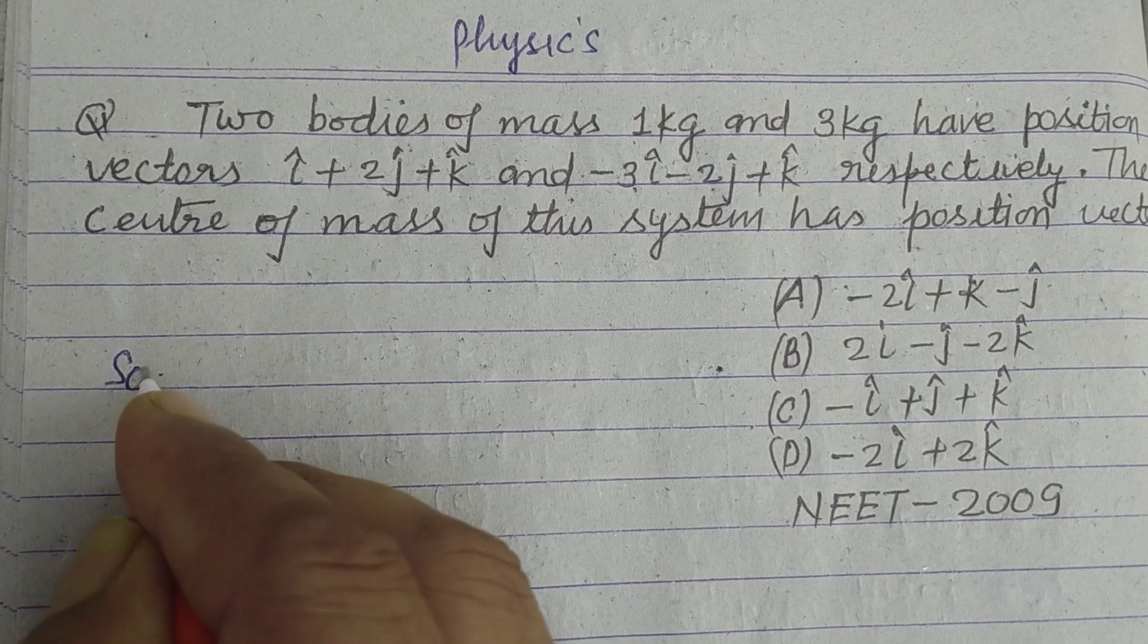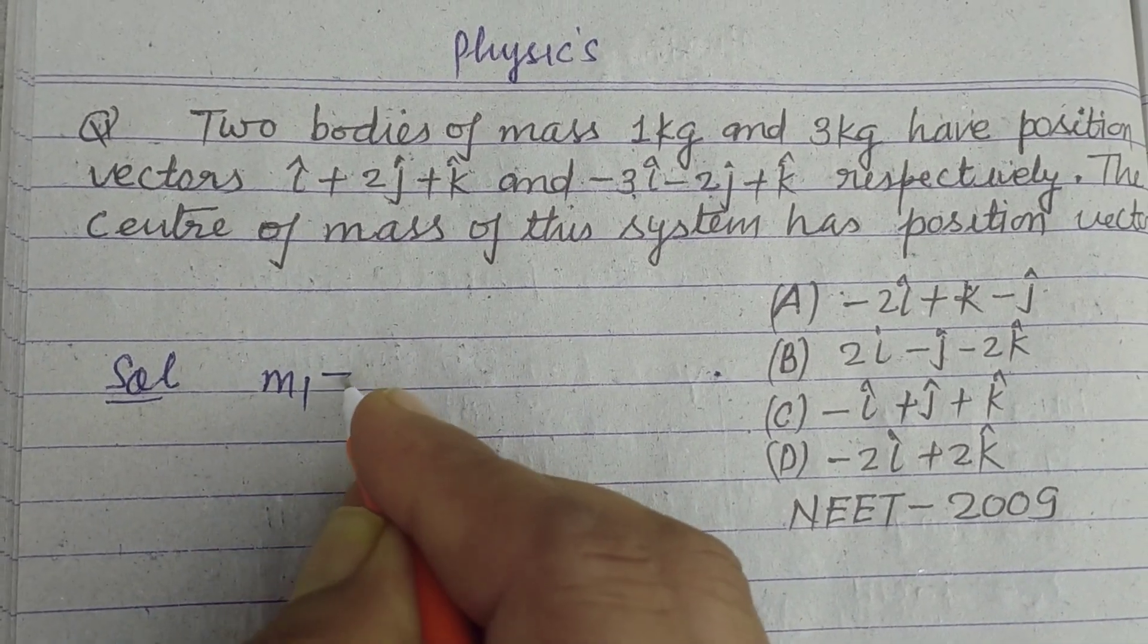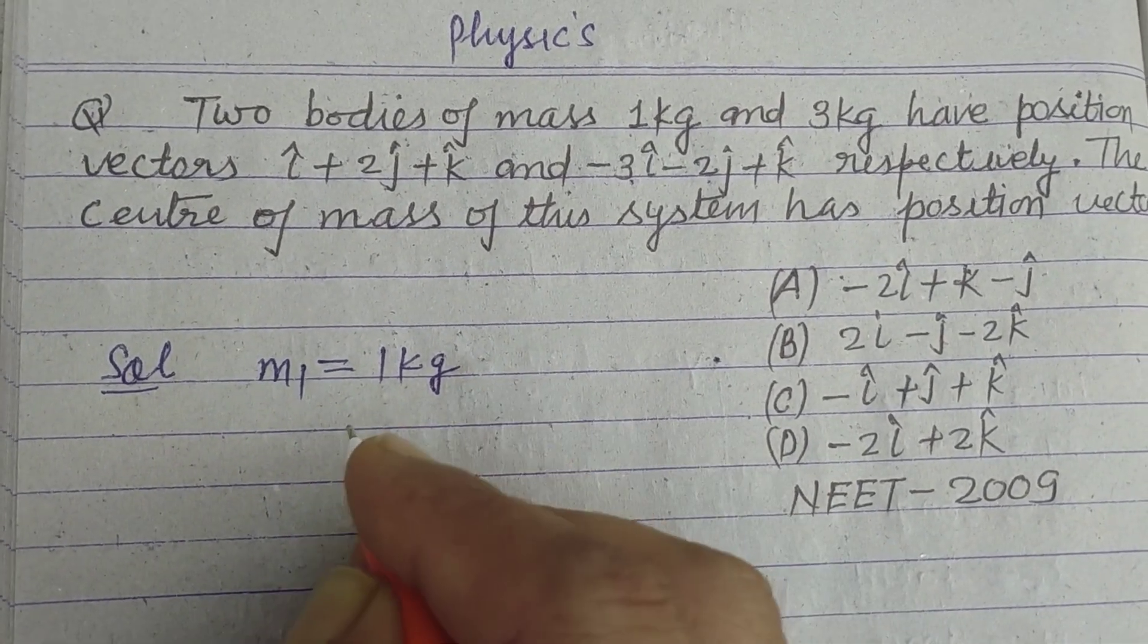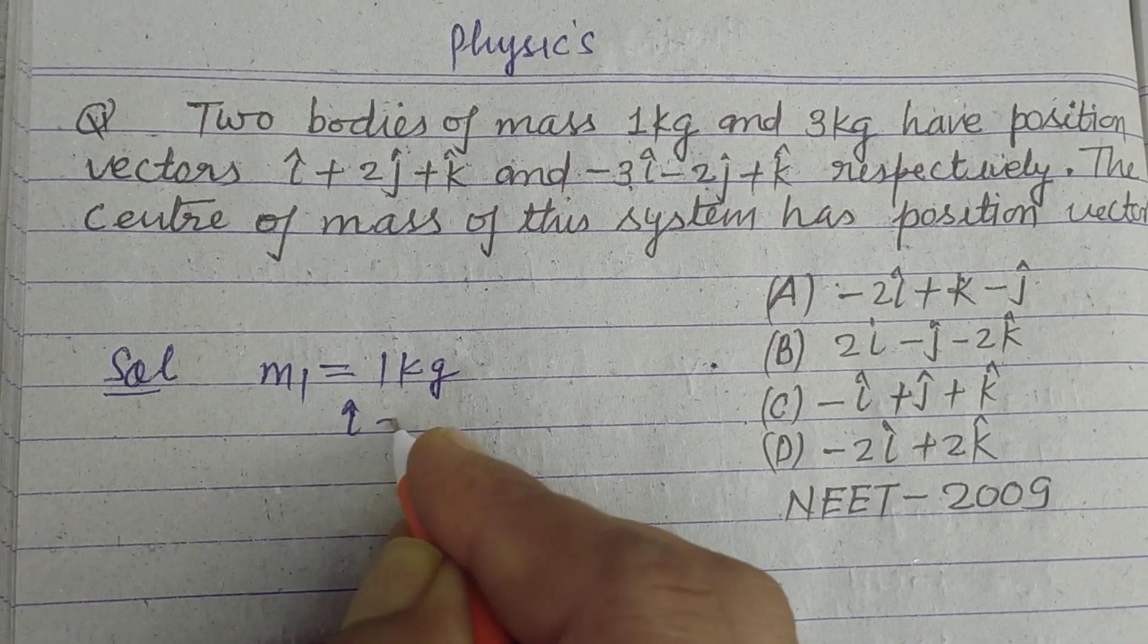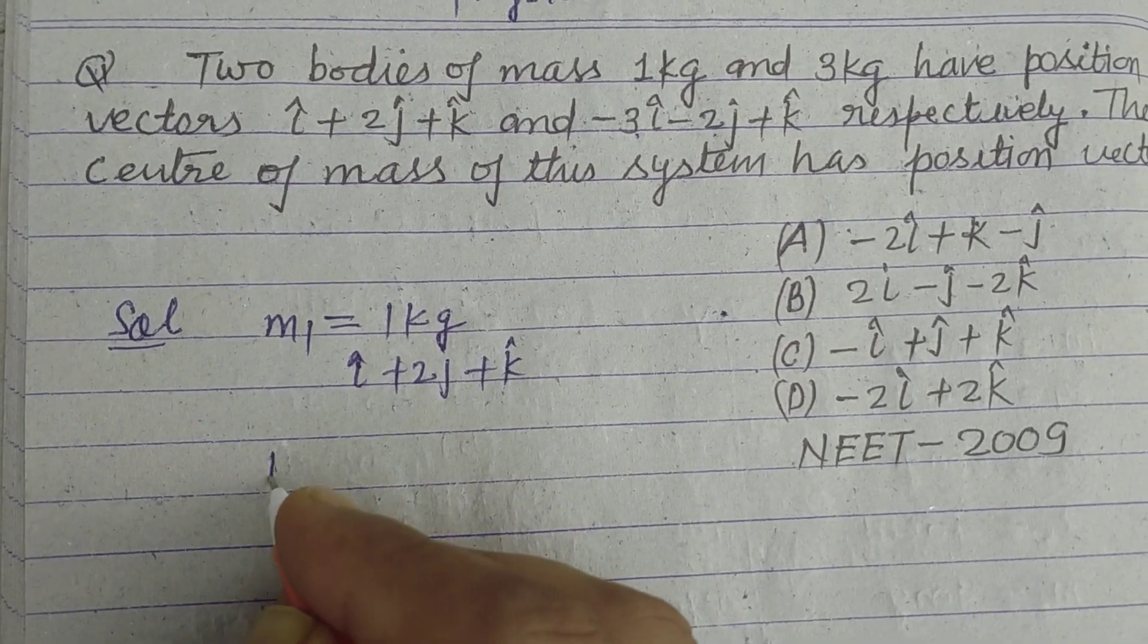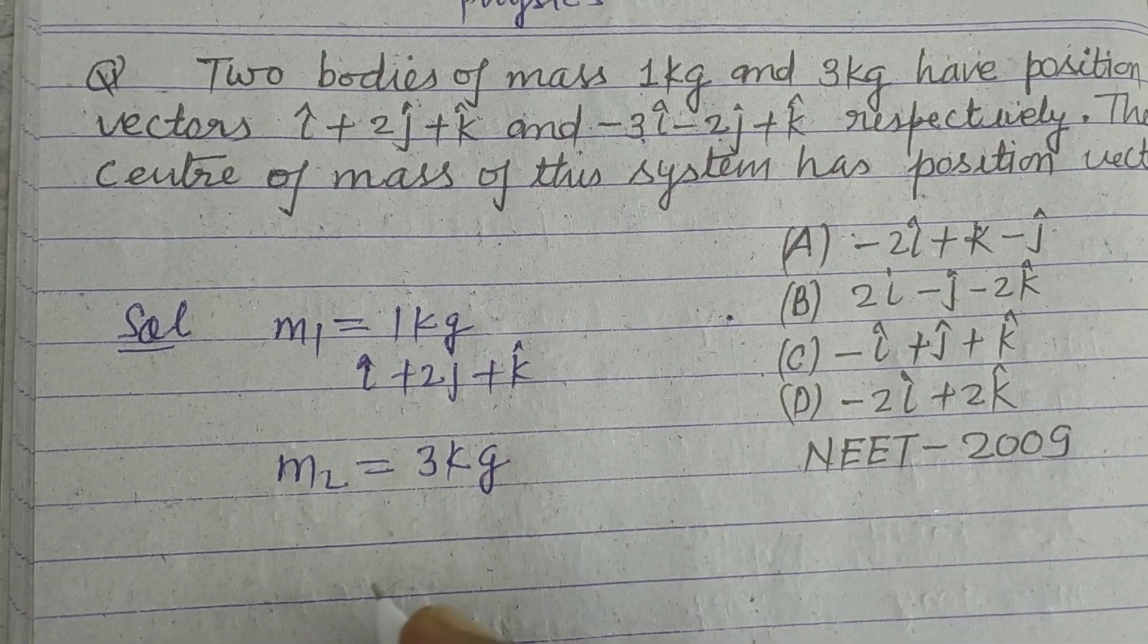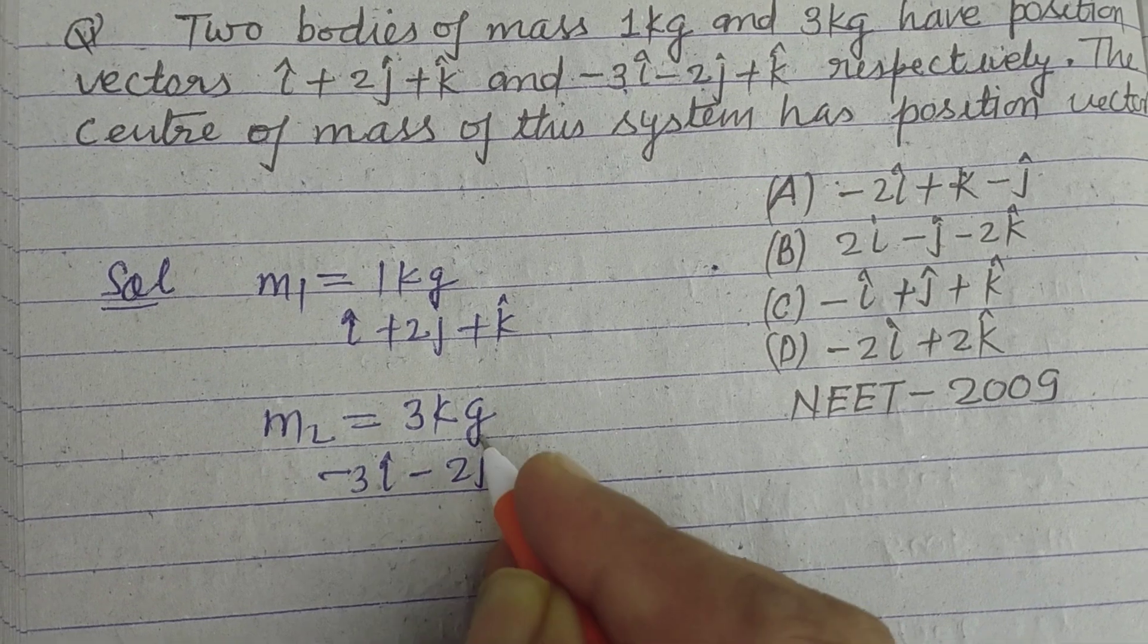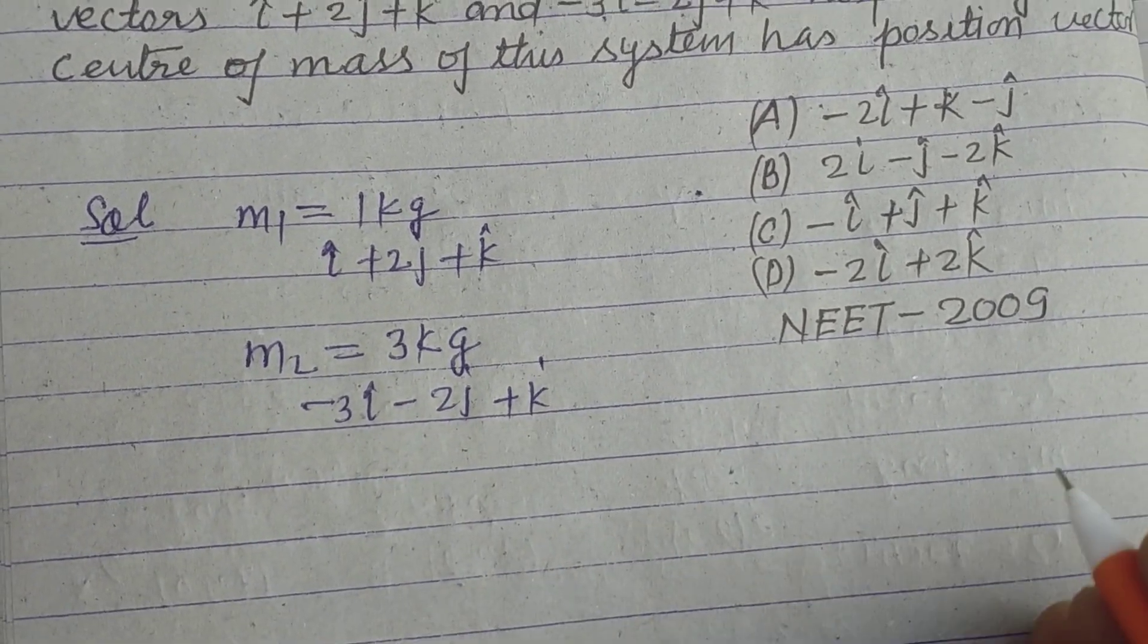So students, here two masses are given to us. m1 is 1 kg, its position vector is i + 2j + k from origin. m2 is given as 3 kg and its position vector is -3i - 2j + k.